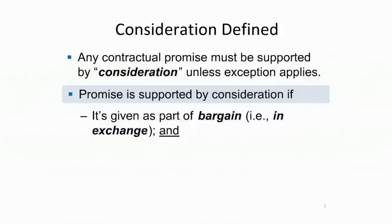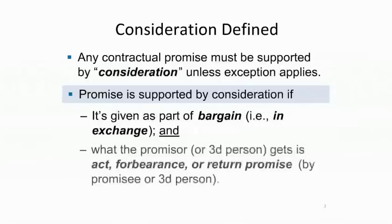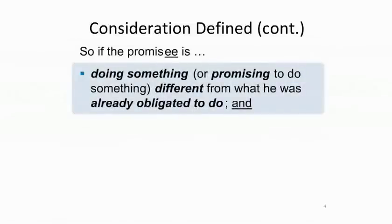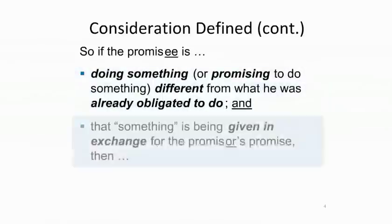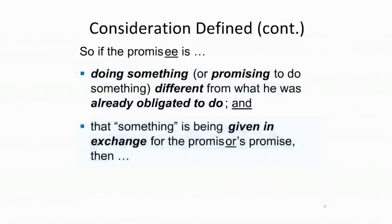In other words, as part of an exchange rather than a gift. And second, either the promisor or a third party must receive in exchange for the promise some act, forbearance, or return promise. The second requirement is relatively easy to meet for multistate purposes — as long as you can identify something that the promisee is doing or promising to do differently from what he was already obligated to do, and that something is being given in return for the promisor's promise, the second requirement is met.